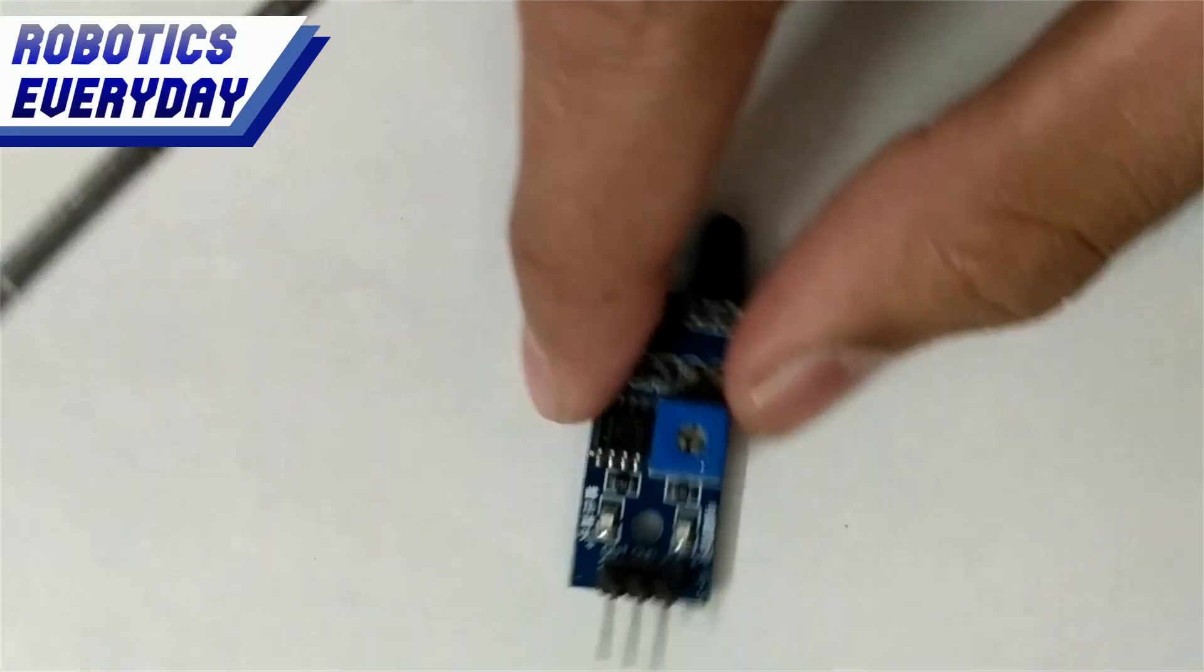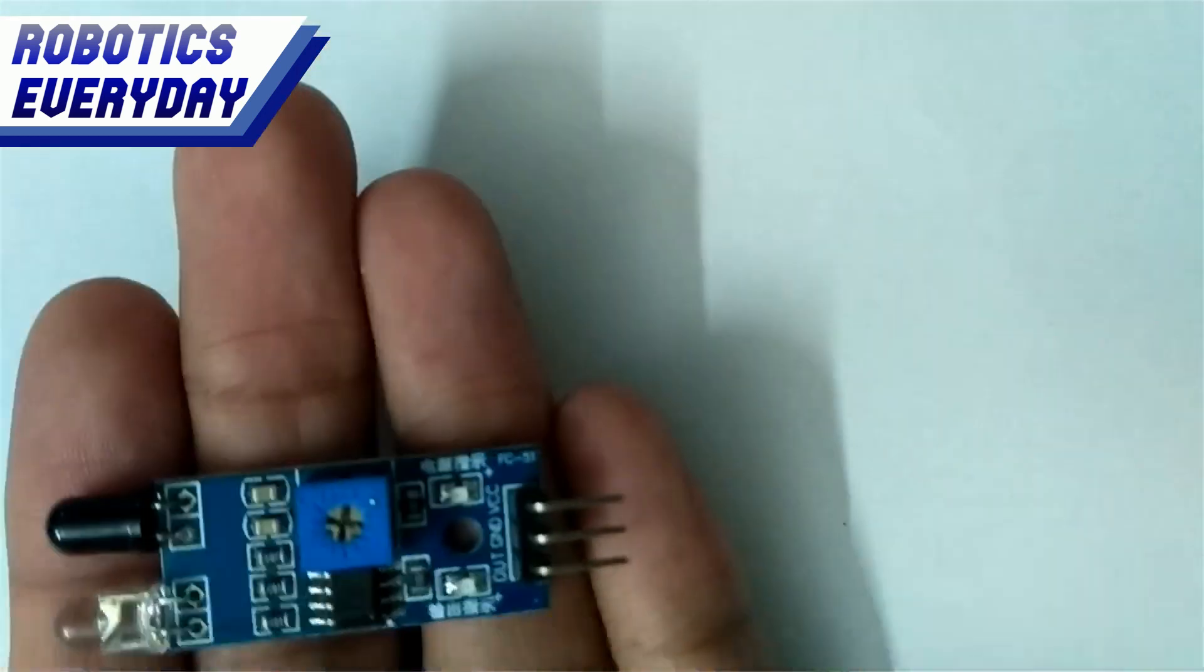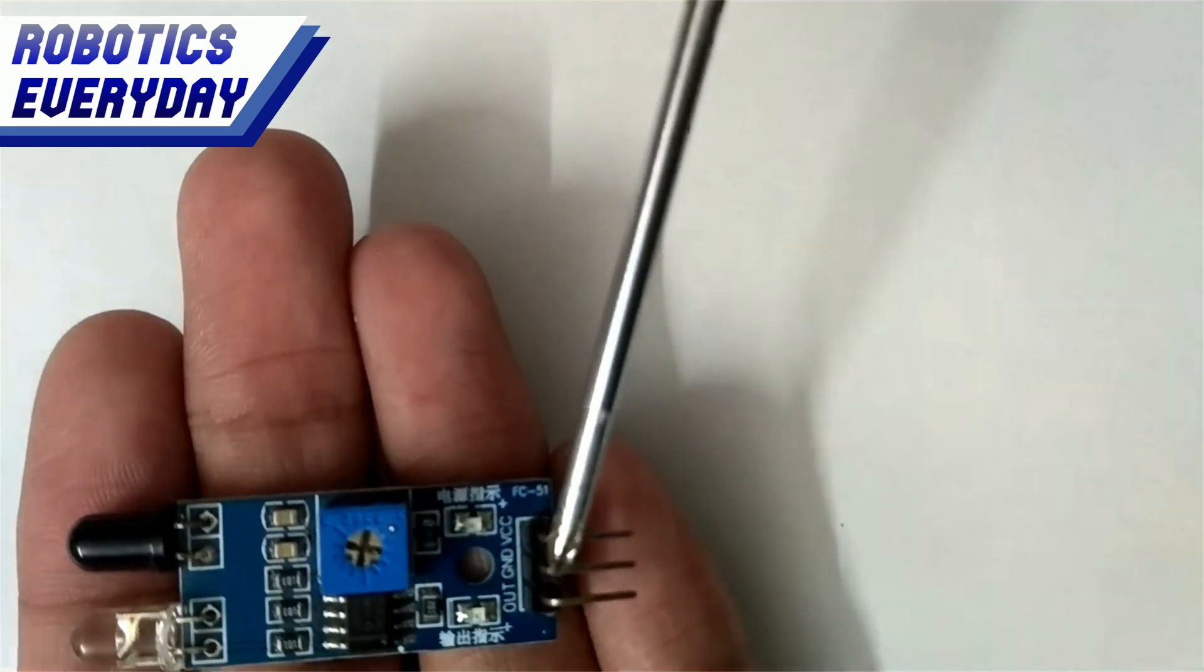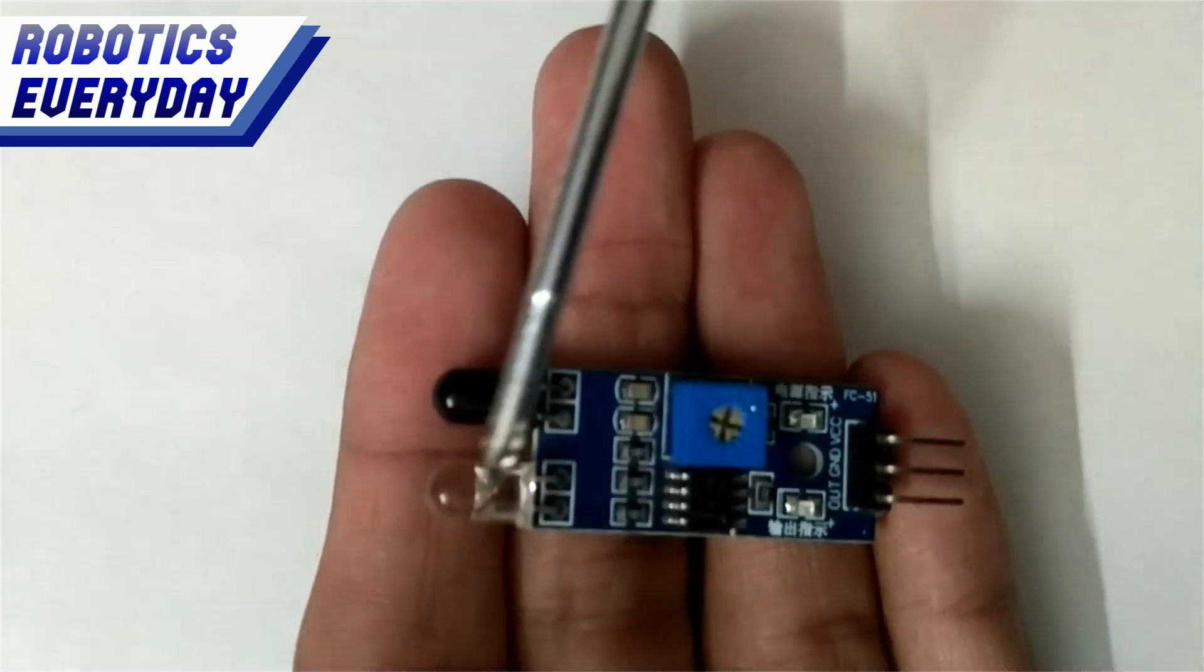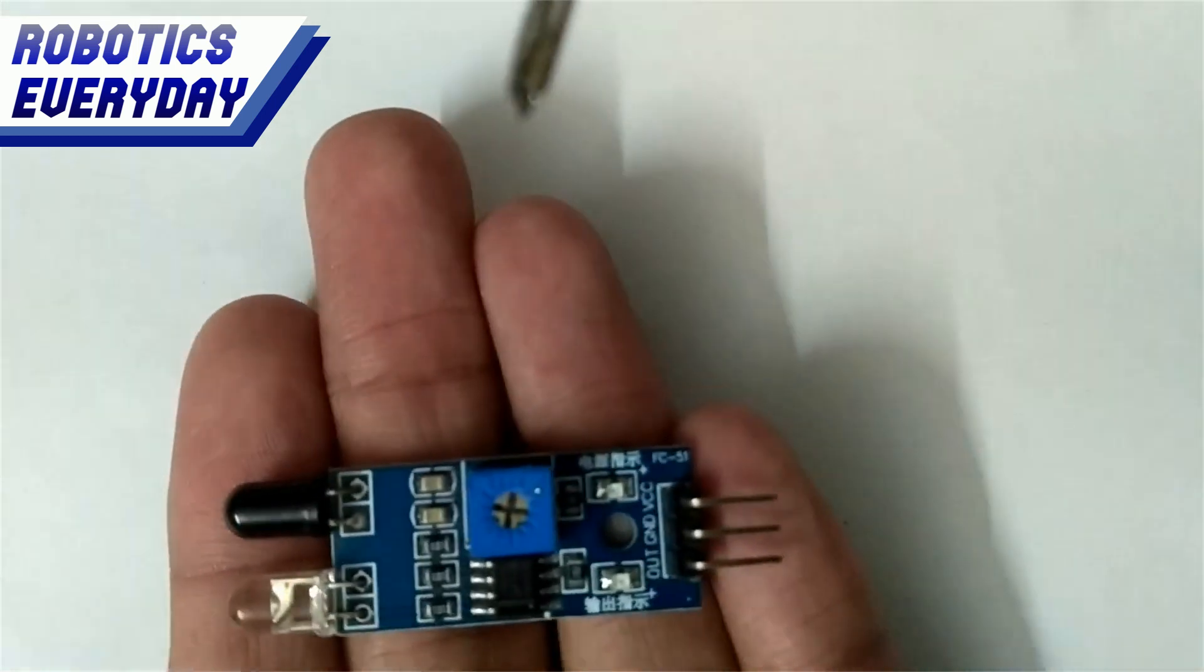Let's zoom into the infrared sensor. This is what the infrared sensor module looks like. It has three pins, two for power and ground and one for the digital output. At the other end of the sensor, we have the sensing element. We have an infrared transmitter LED and the other one is an infrared sensing diode.